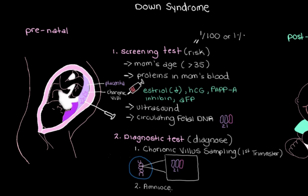This test is called an amniocentesis — 'amnio' referring to the amniotic fluid surrounding the developing fetus. This fluid contains cells shed from the growing fetus, which carry the fetus's DNA. A needle is inserted into the abdomen and into the uterus to collect some of this amniotic fluid. Just as with chorionic villus sampling, we then look for any extra 21st chromosome or extra genetic material from chromosome 21 in the fetal cells.